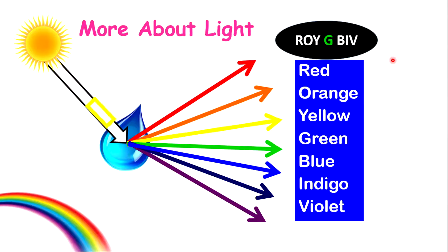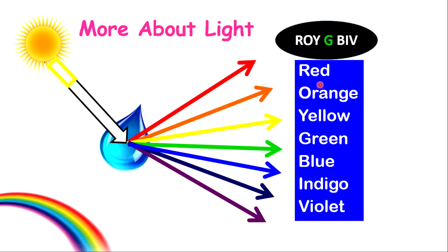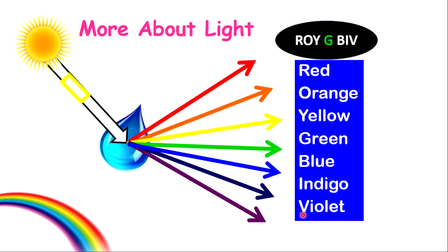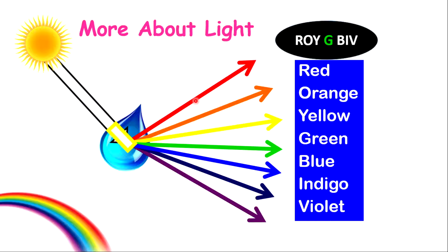White light contains seven different colors, abbreviated as ROYGBIV: red, orange, yellow, green, blue, indigo, and violet. A point to note is that when light passes through prism-like objects, such as water molecules or a glass prism, the light will refract and disperse. The reason why light disperses into different colors is because each of these colors has a different wavelength.